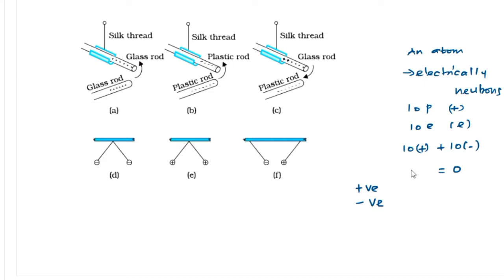How are charges produced? First let us discuss charges by friction. By friction you can produce charges. Take a glass rod — if the glass rod is rubbed with silk cloth or woolen cloth, the glass rod acquires positive charge. The reason is the glass rod loses electrons to the silk or woolen cloth. This can be tested with another positively charged glass rod: when brought nearer, you can see a repulsive force.